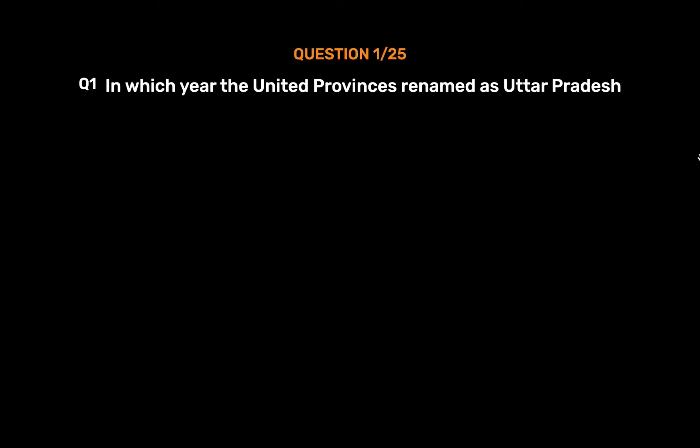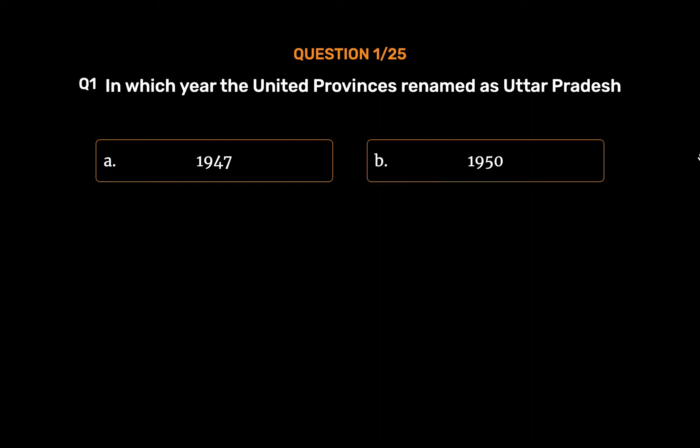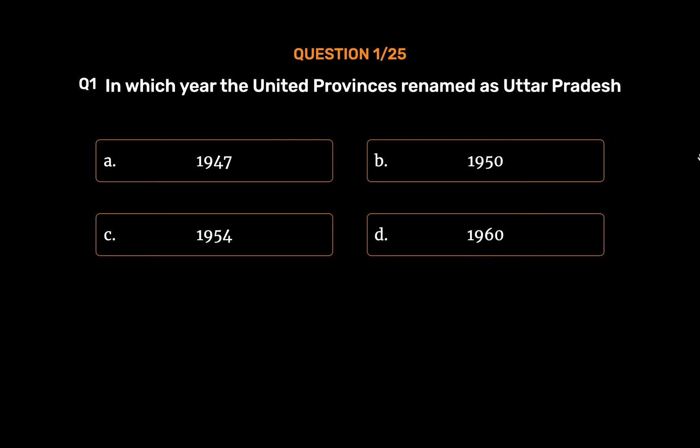Question No. 1: In which year were the United Provinces renamed as Uttar Pradesh? Option A: 1947. Option B: 1950. Option C: 1954. Option D: 1960. The correct answer is Option B: 1950.